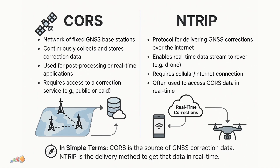People use the terms CORS and Ntrip interchangeably, so let's clarify what's what. While both CORS and Ntrip are important for GNSS positioning, they're not the same. CORS refers to the network of permanent GNSS reference stations, while Ntrip is the protocol used to transmit the correction data from these stations to end users over the internet. CORS data is delivered over the internet, so you will need an internet connection while flying your drone.